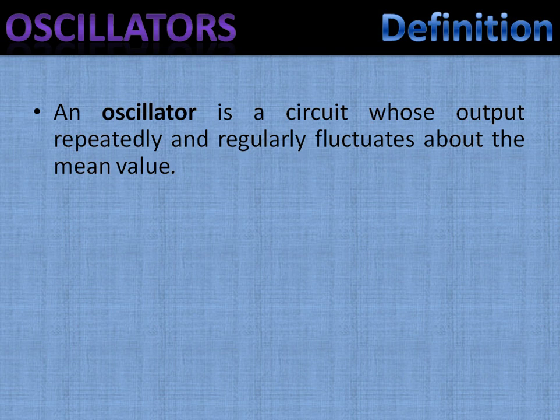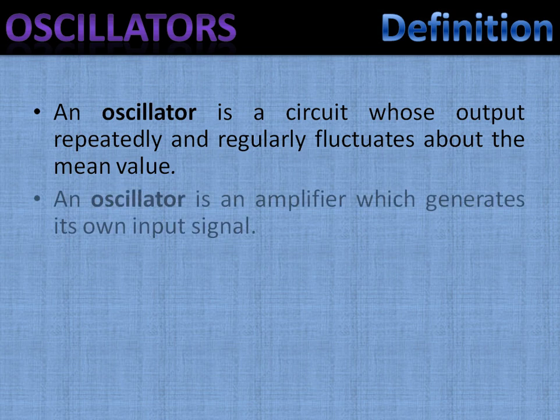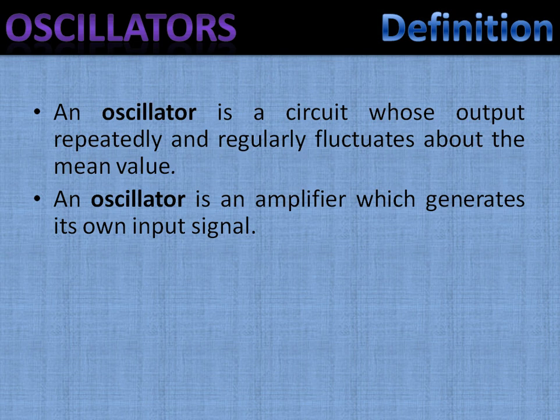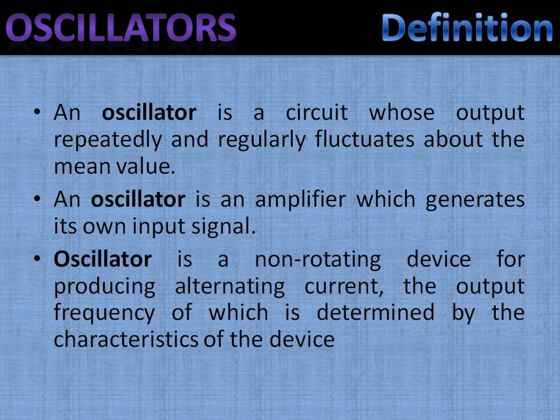It also is an amplifier which generates its own input signal. An oscillator is a non-rotating device for producing AC current, the output frequency of which is determined by the characteristics of the device.